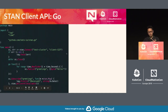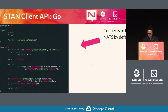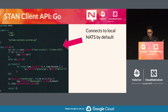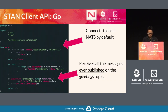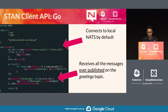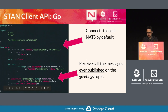The STAN API is very similar to the NATS client API. By default it connects to a locally available NATS server, so it has an embedded NATS connection, but you can also pass your own customized NATS connection. In this case, the client will receive all messages that have ever been published to a channel from the beginning — you pass stan.DeliverAllAvailable and it will replay all messages published so far.